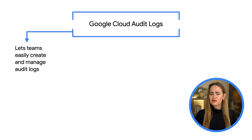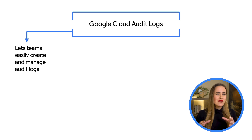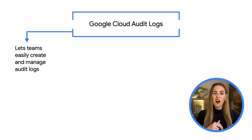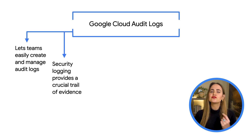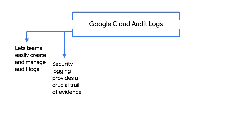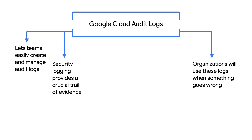Regardless of how carefully we code or thoroughly we debug a piece of software, problems are going to come up. And when they do, it's almost impossible to determine why they happened and figure out how to fix them unless there's a trail of breadcrumbs to follow along the way. Security logging provides that crucial trail of evidence, so during an active investigation or post-mortem analysis, having regular logs to go through is critical to identify the cause of the issue.